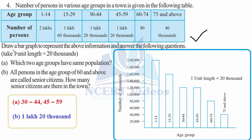Now, Part A: Which two age groups have the same population? We check for bars of equal height. We can clearly see that the age groups 30 to 44 and 45 to 59 have the same population.